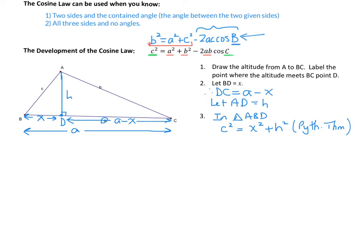By SOH-CAH-TOA, the cosine of angle B equals the adjacent side X over the hypotenuse C. Solving that for X: X equals C times the cosine of angle B.